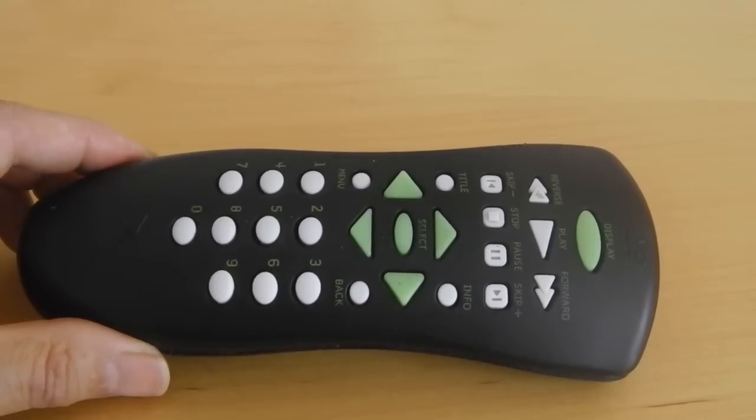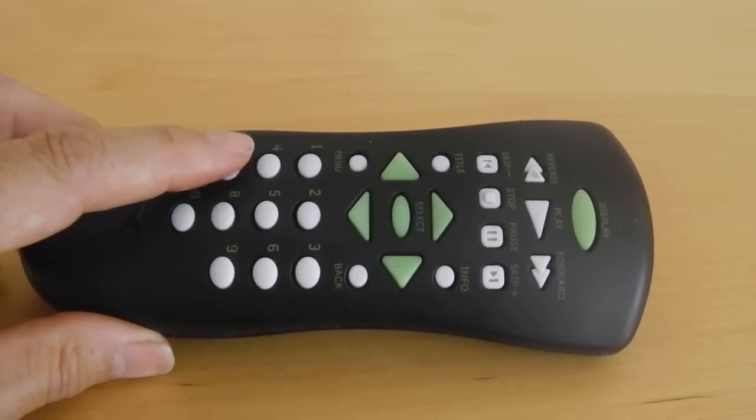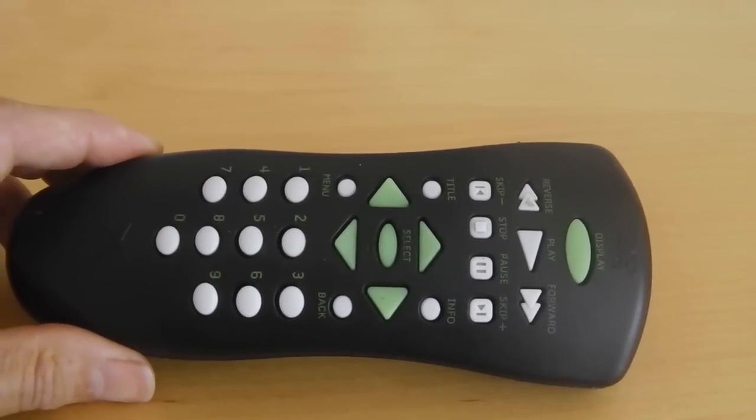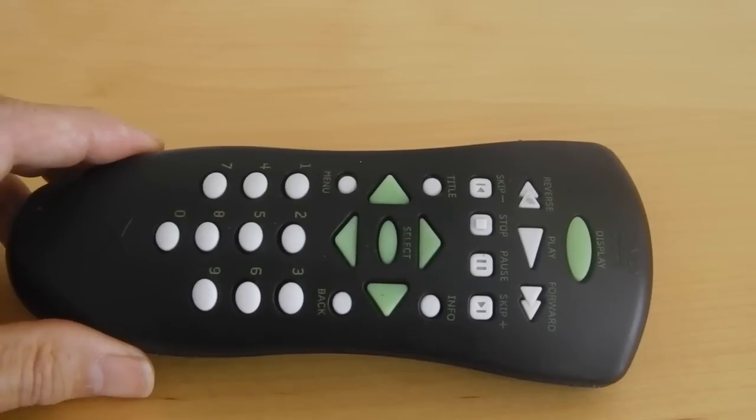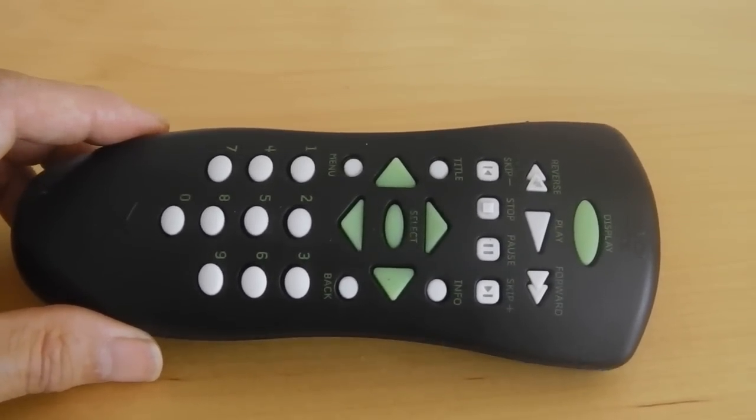The problem with this remote control is that the buttons all work and you see a flashing of the LED on the receiver, but nothing happens and you're wondering, well, what's going on? Is it the Xbox or is it the remote?